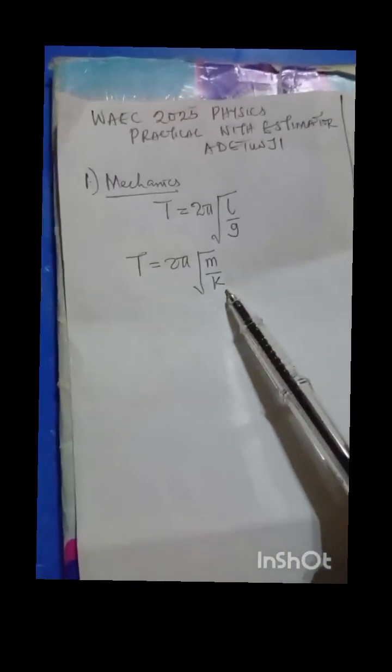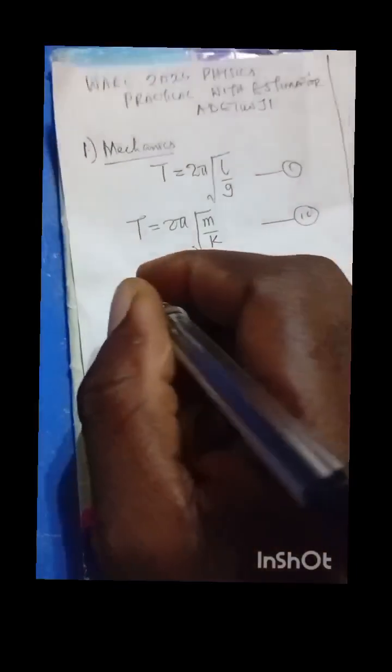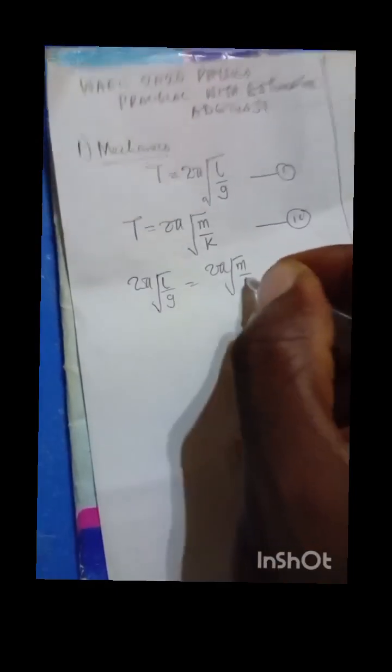This time we have an experiment that talks about mass and maybe K, that is spring constant, and likewise length. Gravity is also involved. To balance things and bring out what we are expecting, I'll call this equation 1 and this equation 2. If I equate equation 1 and 2, I'll have 2π√(L/G) = 2π√(M/K).